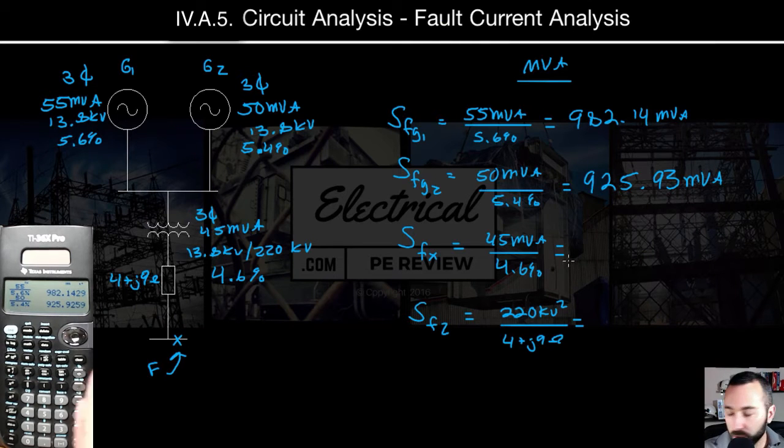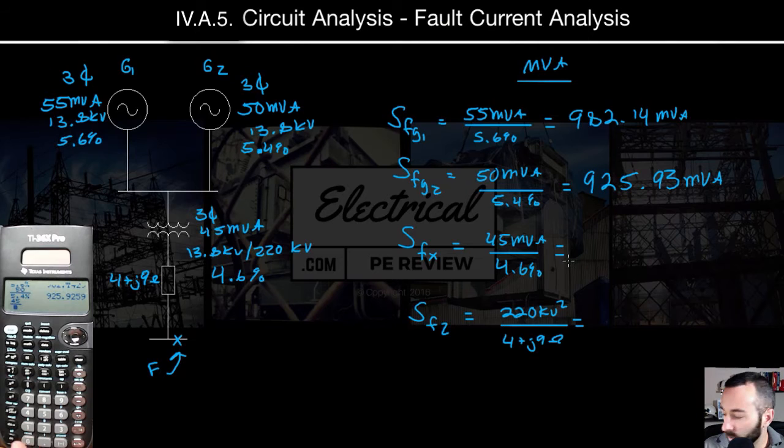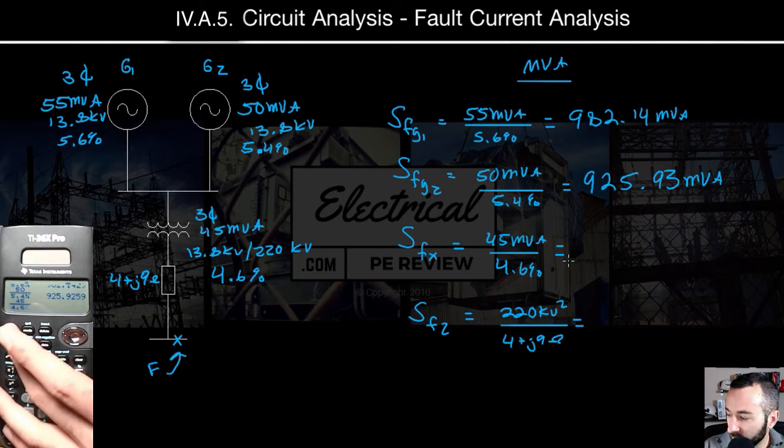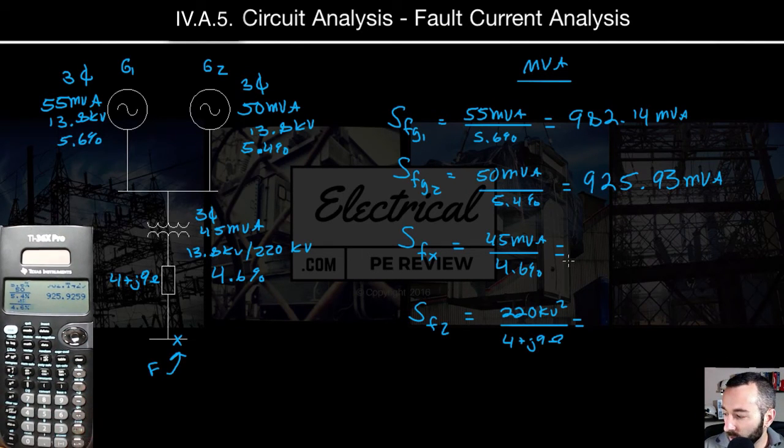Next, for our transformer, we've got 45 MVA divided by an impedance of 4.6%. That gives us a fault contribution of 978.26 MVA.